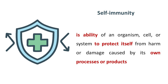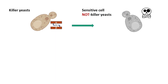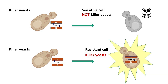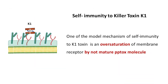Self-immunity is the ability of an organism, cell, or system to protect itself from harm or damage caused by its own processes or products. In the context of yeast that produce killer toxins, they often have self-immunity mechanisms to safeguard themselves from the toxic effects of their own toxins. Immunity to the toxin K1 is still understudied; however, several models of immunity have been proposed. One of them is oversaturation of the membrane receptor by the immature PPtox molecule.